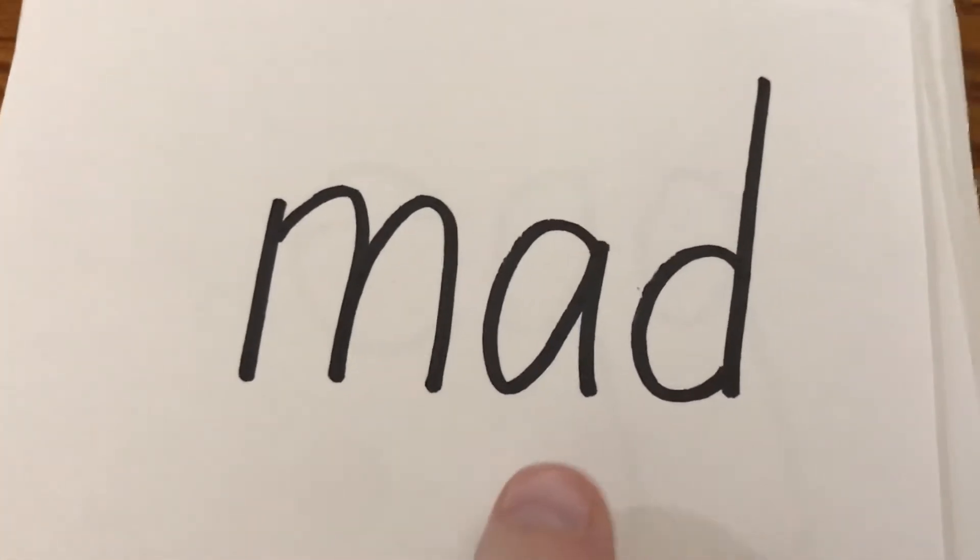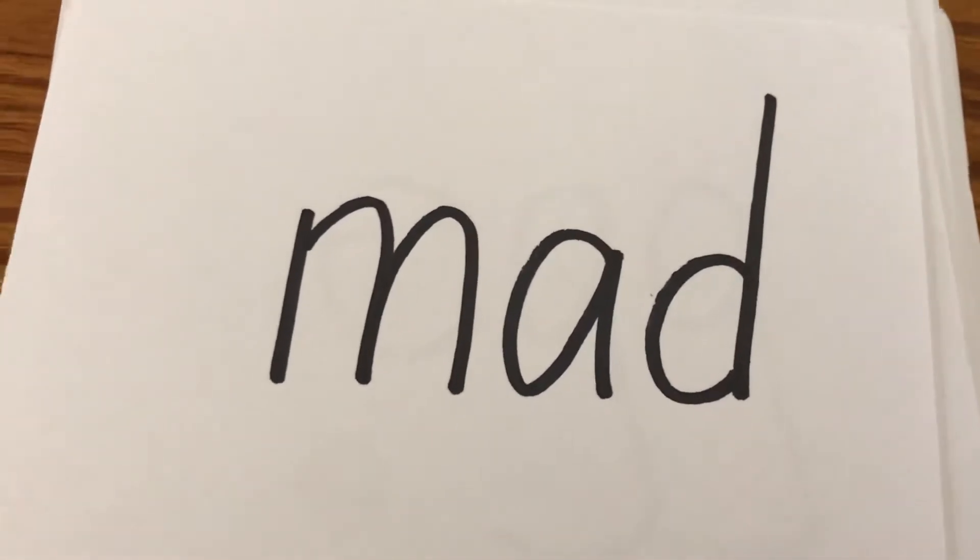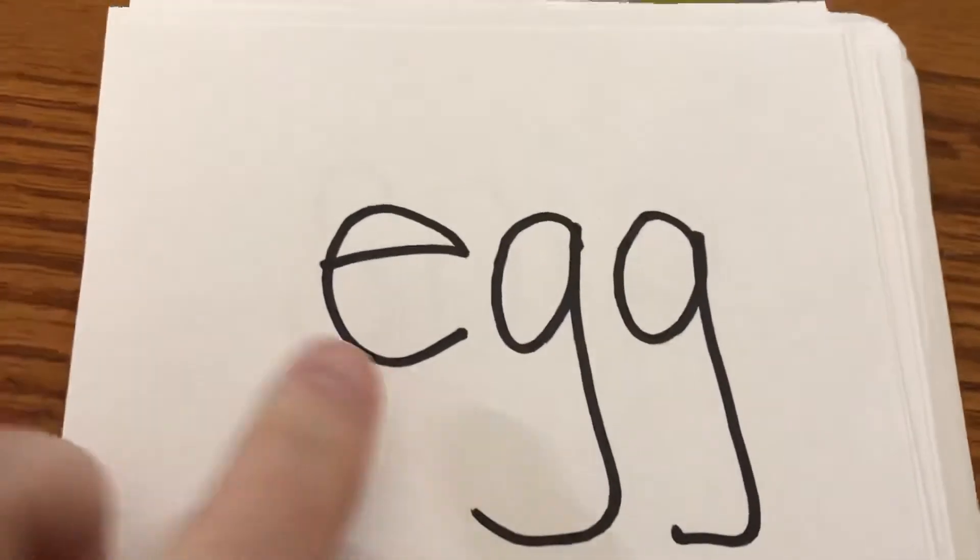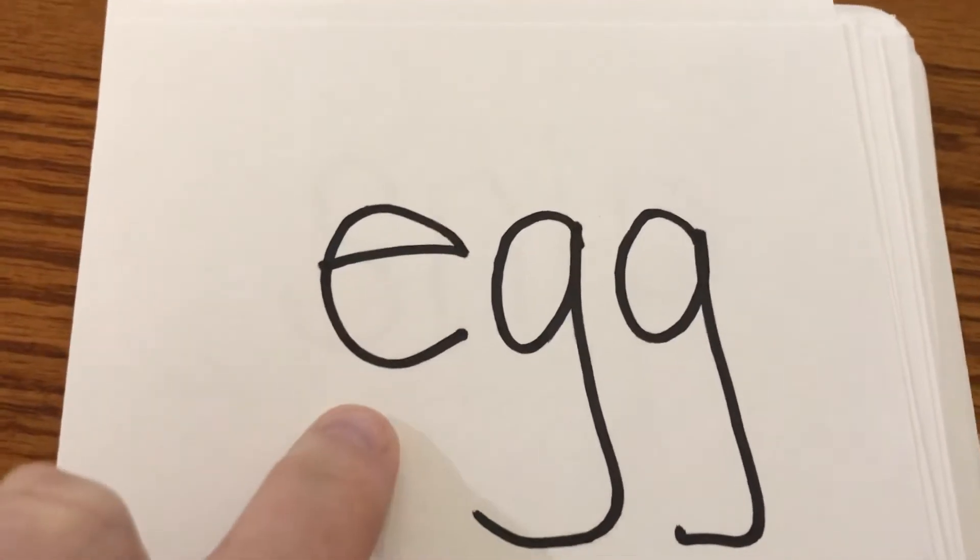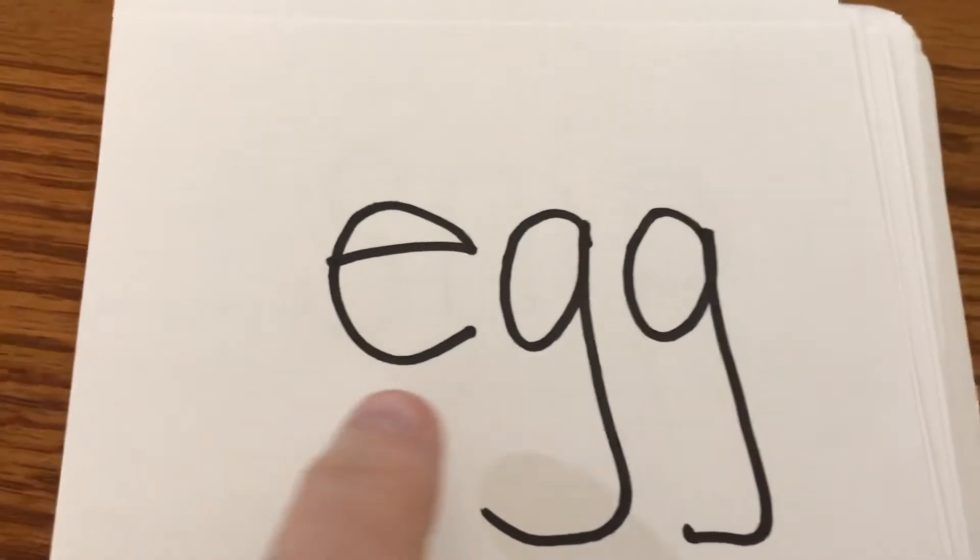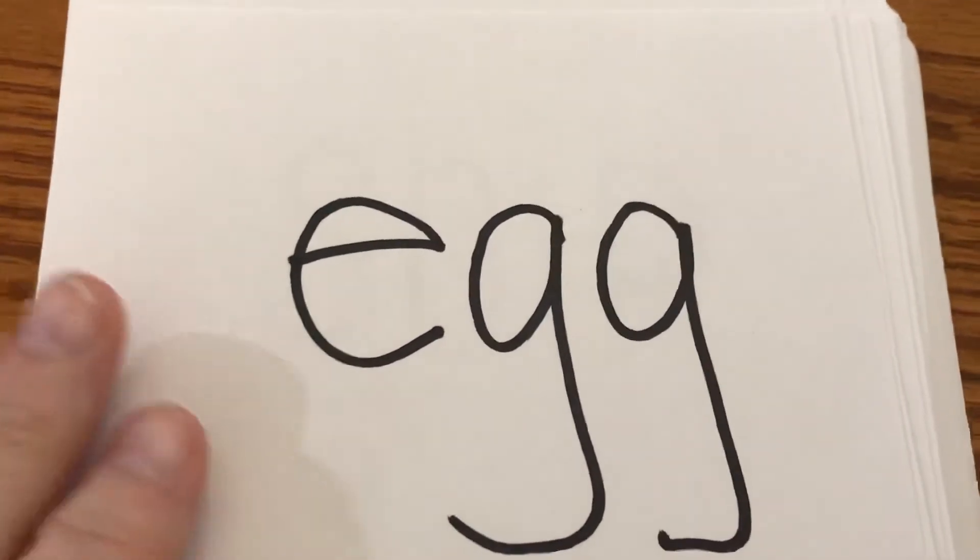M-a-d. Mad. Uh-oh, mom is mad. Okay, E says A. You ready? E-e-g. Egg. Egg. I would like to have an egg for breakfast.